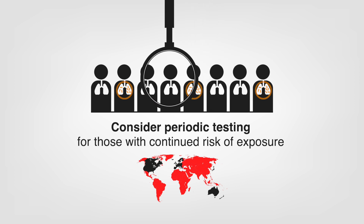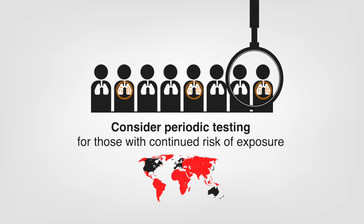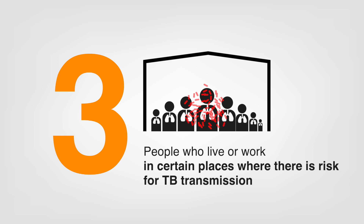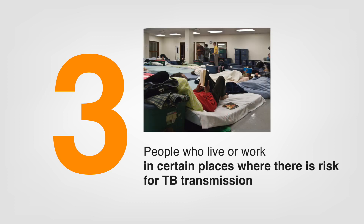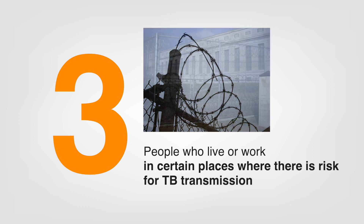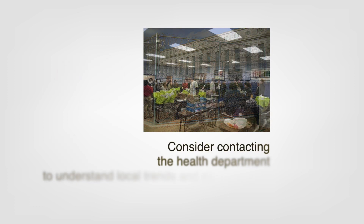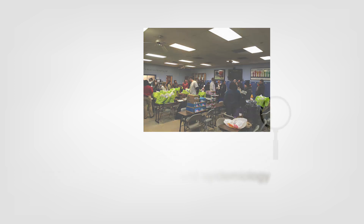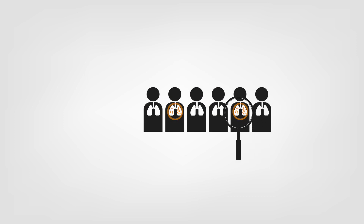Consider local TB epidemiology when deciding whom to test in your area. Finally, people who live or work in certain places where there is risk for TB transmission may be at increased risk for infection. This includes homeless shelters or correctional facilities where high-risk persons reside or gather. Consider contacting the health department to understand local trends and epidemiology, including who is at risk in your area. Test these individuals and consider periodic testing for those with continued exposure.